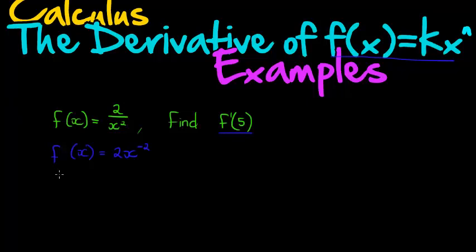Now we can find the derivative. Simply multiply the exponent to the front and subtract 1 from the exponent. So we get negative 4 x to the power of negative 3.